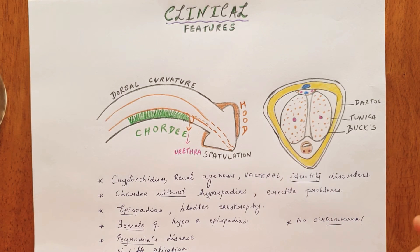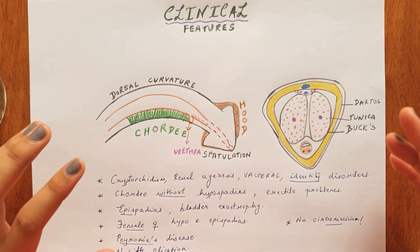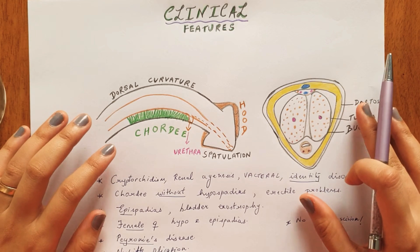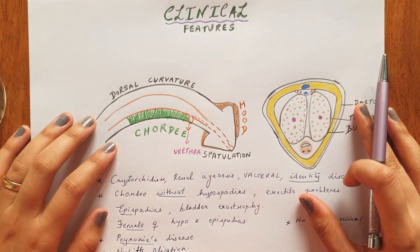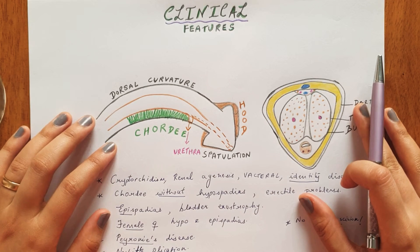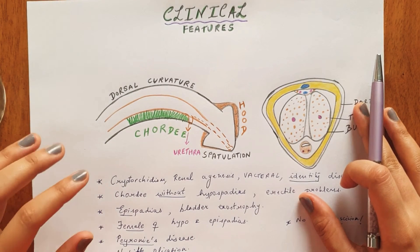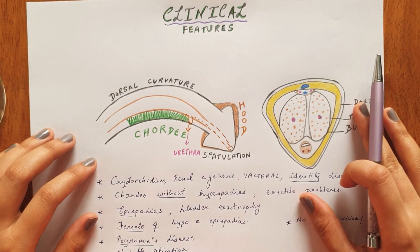Chordee is of importance because it is commonly seen during erection. That is why the artificial erection test is also performed to assess the extent of the chordee, which we will discuss about later.